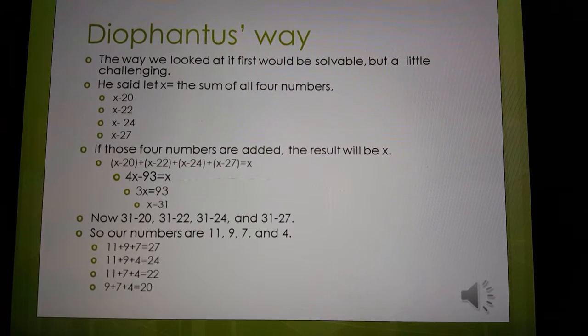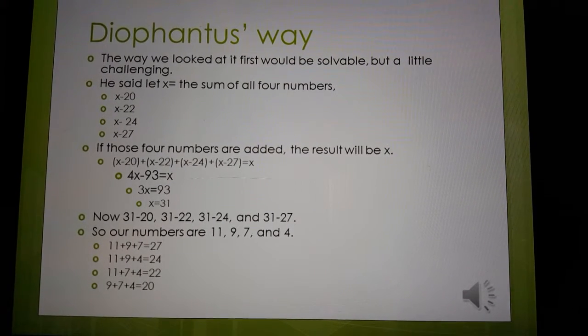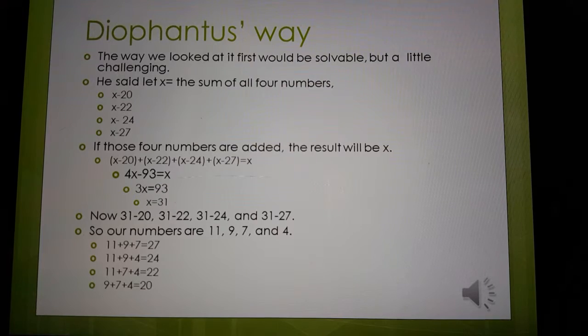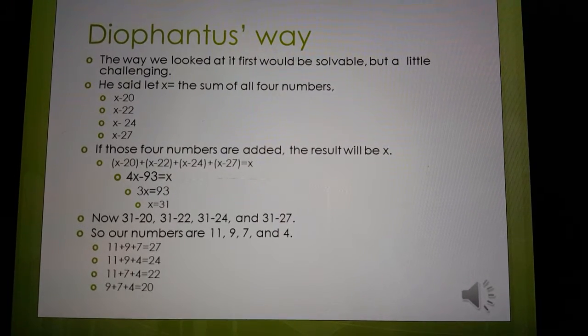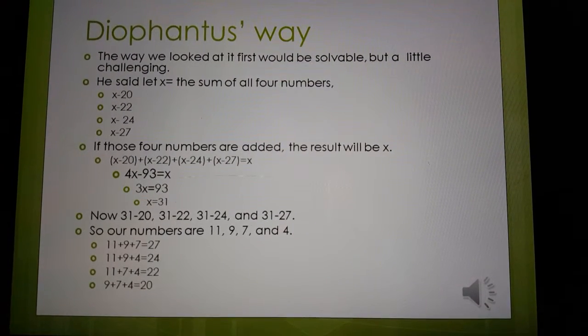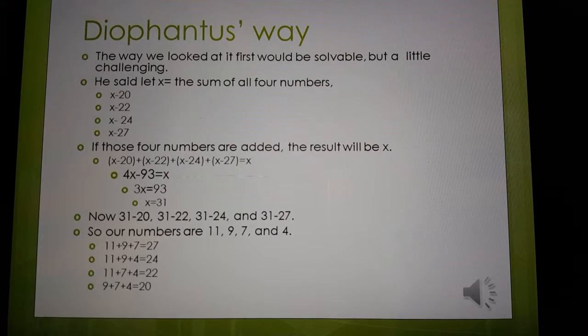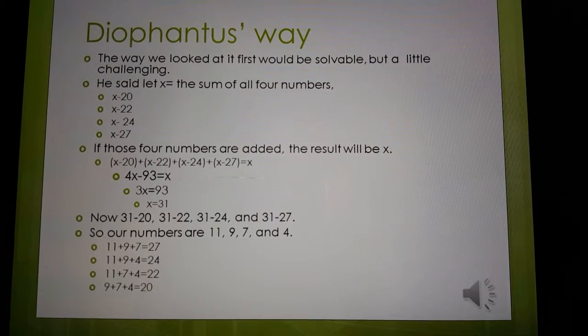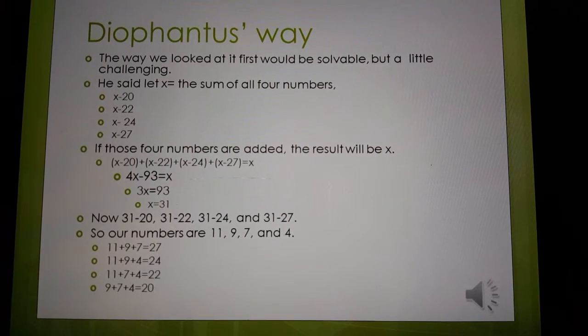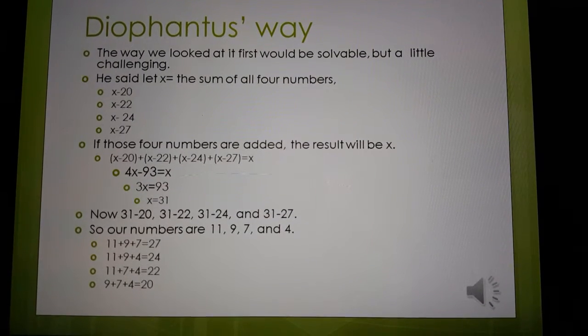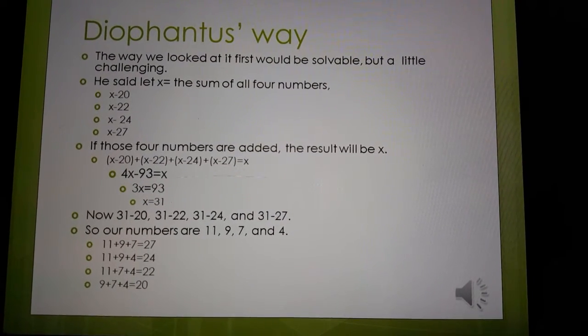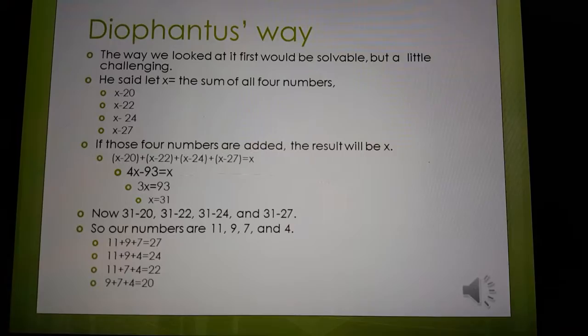And if you add those back up, you see that 11 plus 9 plus 7 equals 27, 11 plus 9 plus 4 equals 24, 11 plus 7 plus 4 equals 22, and 9 plus 7 plus 4 equals 20, which is all of our original numbers.